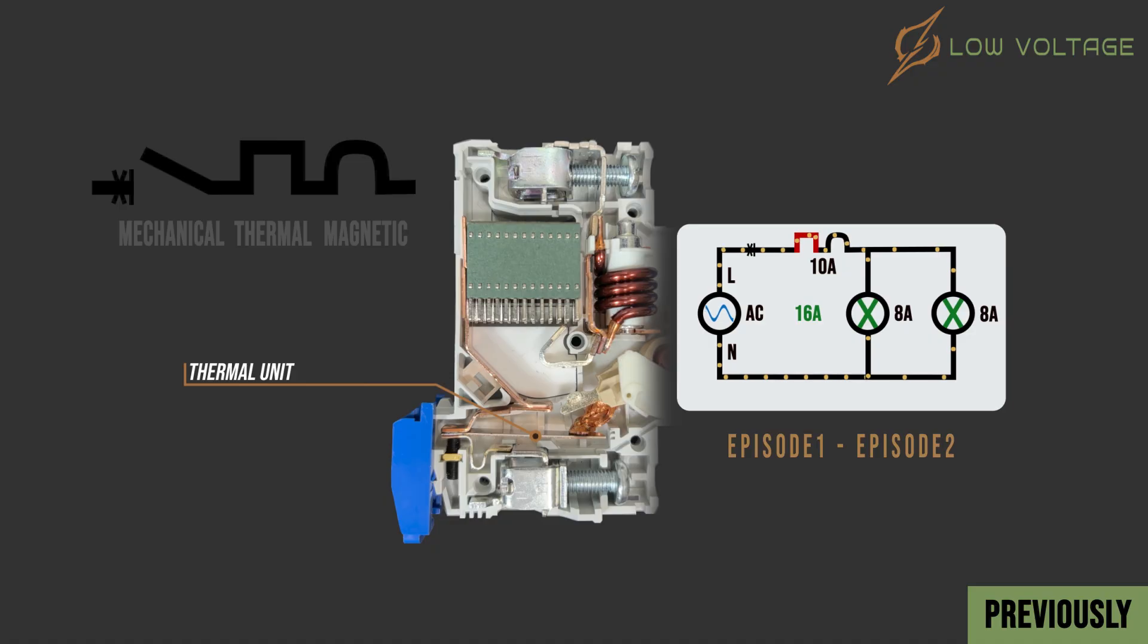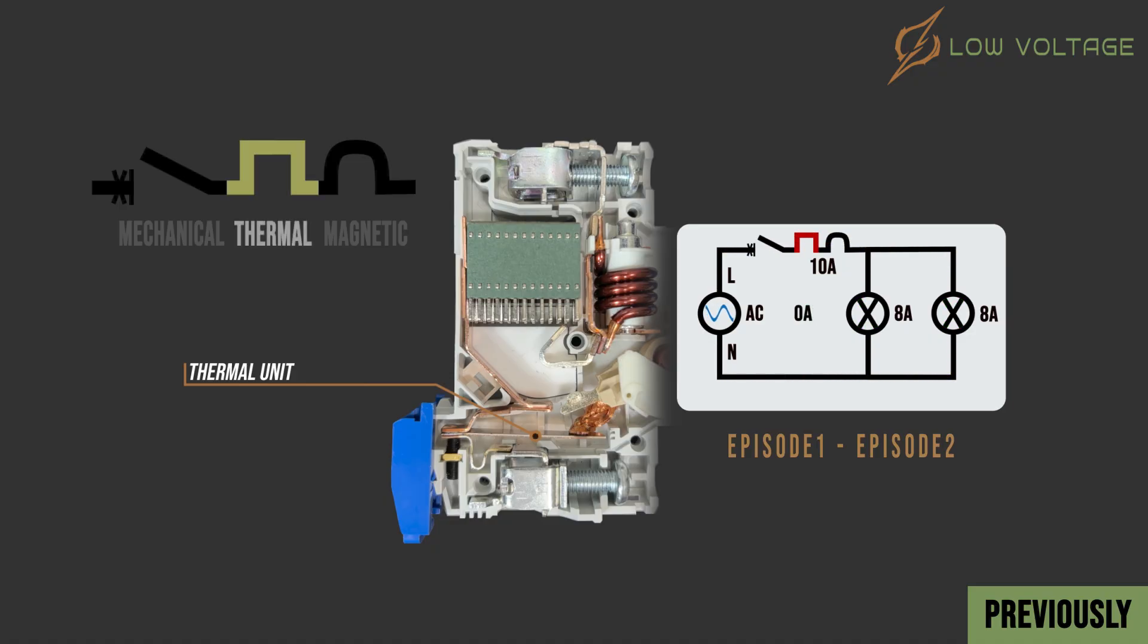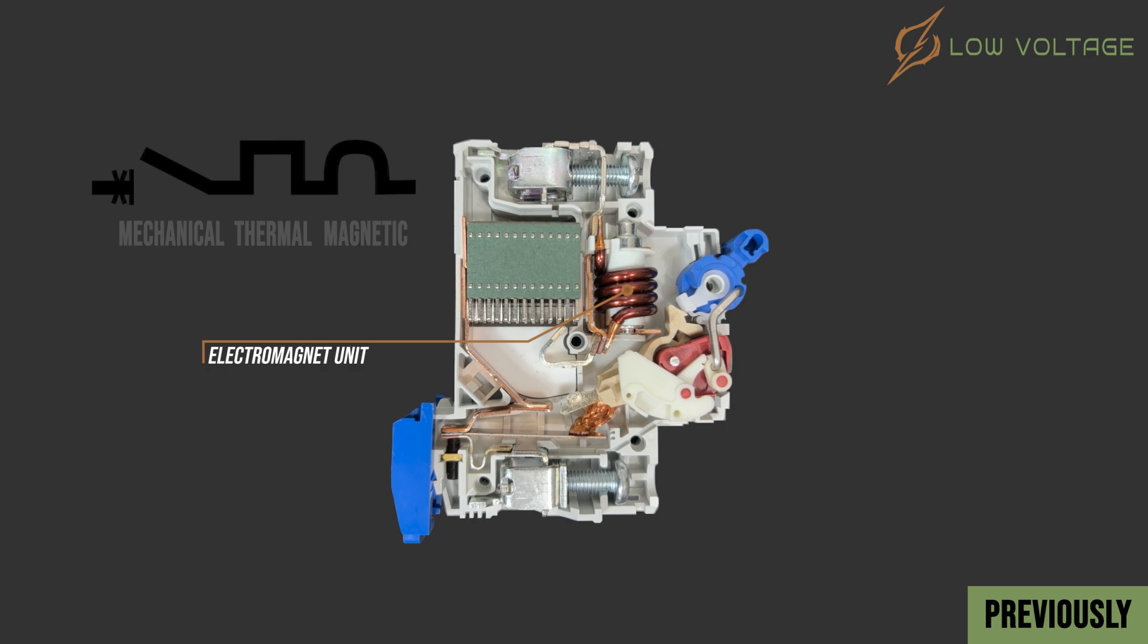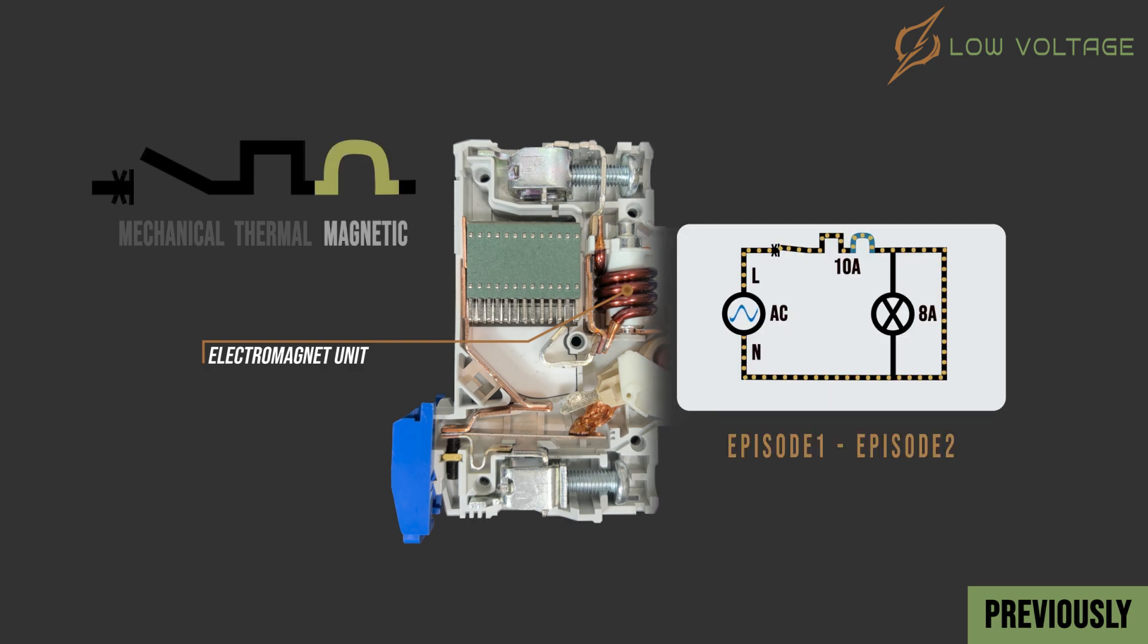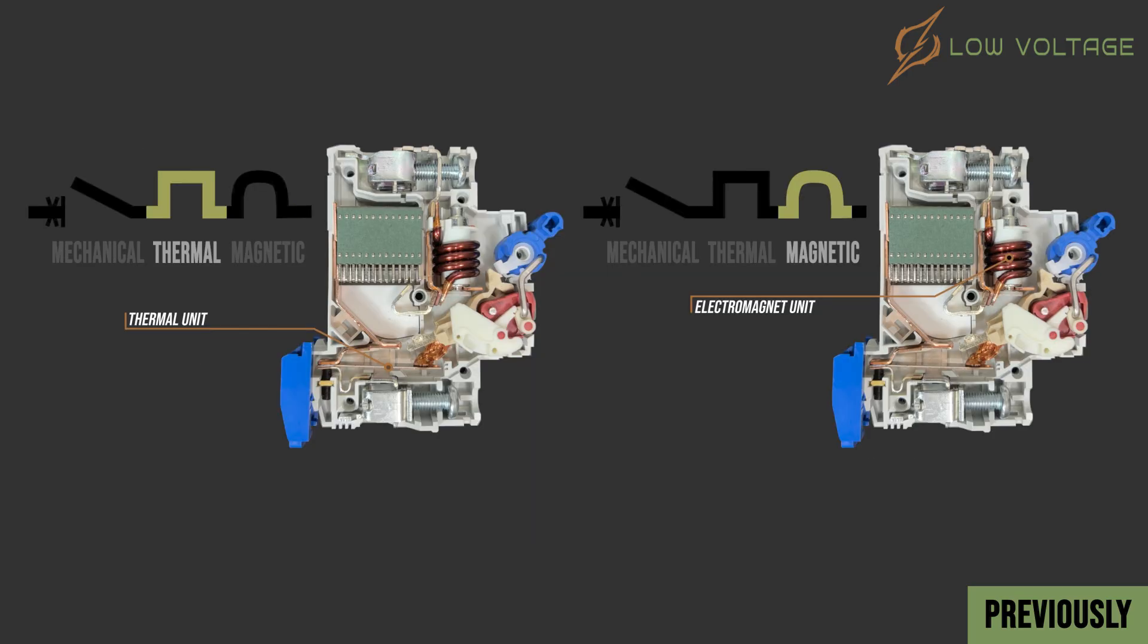In Episode 1 and 2, we learned about MCB Thermal Unit that is responsible for the long-time protection, and we also learned about MCB Electromagnetic Unit that is responsible for short-time instantaneous protection. These protection units are very important to understand because MCB Curve represents thermal and magnetic characteristics.